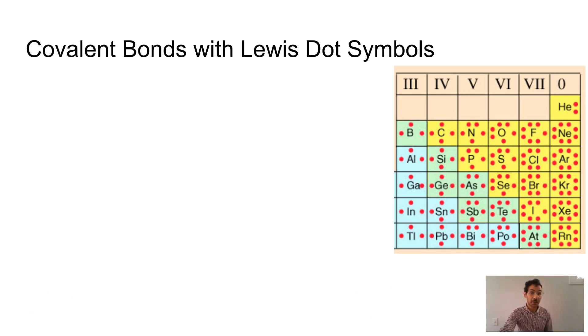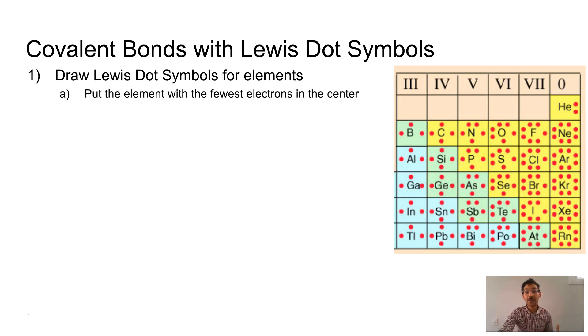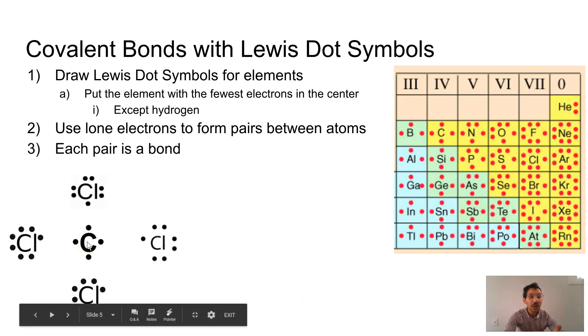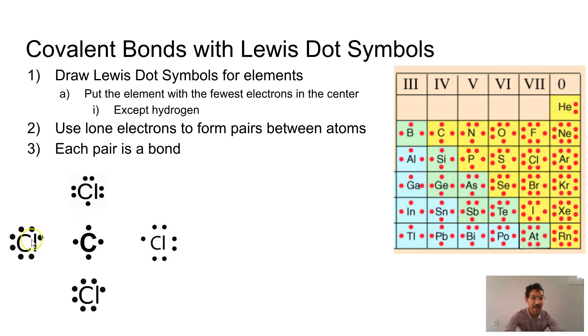So if we want to describe covalent bonding with Lewis dot symbols, we're going to draw our Lewis dot symbols for the elements. We're going to put the element with the fewest electrons in the center, excluding hydrogen. Hydrogen doesn't get to go in the middle of any molecules. And we're going to use the lone electrons to form pairs between our atoms, connecting everybody up to our central atom. And remember each pair of electrons is a bond. So here I've got carbon who's only at four lone little dots and I've got my chlorines, each one with one lone little dot. Well, what I can do is pair a chlorine dot with one dot from my carbon making up four pairs or four bonds. This is one way to show this structure, but I think a much cleaner way to show it is this way where each bond is represented by a line. So carbon is participating in four bonds. Each bond gives it two electrons. So it has a total of eight electrons around it and is a happy camper.